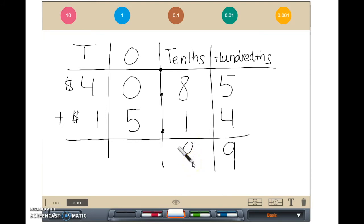We will continue by adding up the numbers in our ones column. Zero plus five equals five. Finally, we can add the numbers in our tens column. Four tens plus one ten equals five tens.